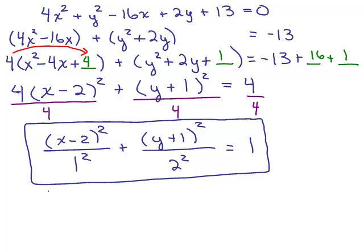Now I can see what the center is. What's your H and your K? Set what's in the equation equal to 0. The X coordinate of the center is 2 and the Y coordinate is negative 1. So the center is at 2, negative 1.